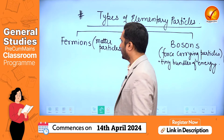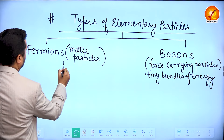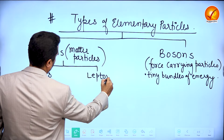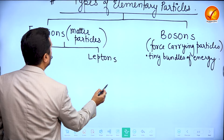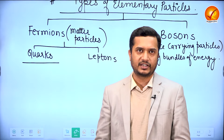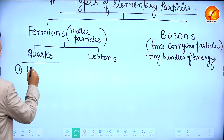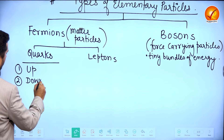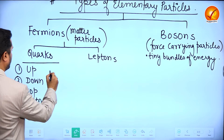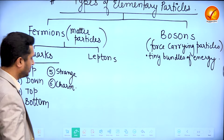Fermions are the elementary particles for matter, and fermions are further divided into two types: quarks and leptons. The elementary particles for matter can further be divided into quarks and leptons. Quarks are of six types — in other words we say they are found in six flavors. The names are: up, down, top, bottom, strange, and charm. These are the six types of quarks.